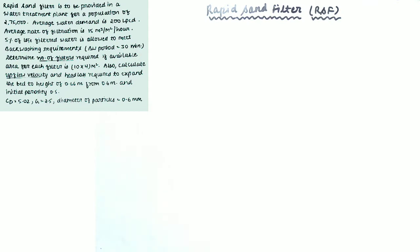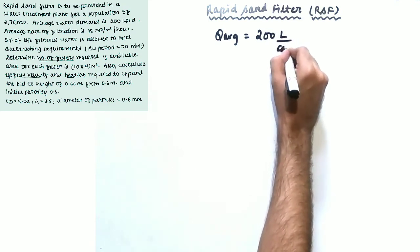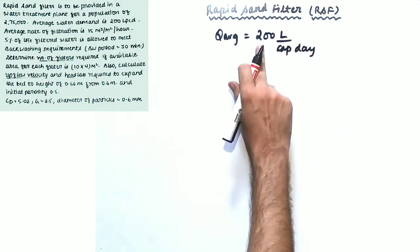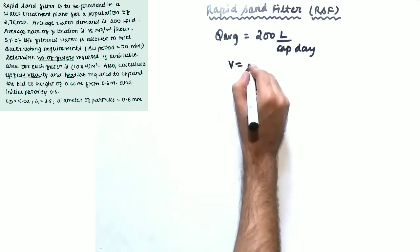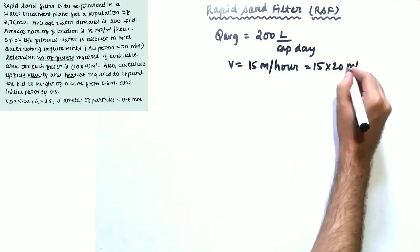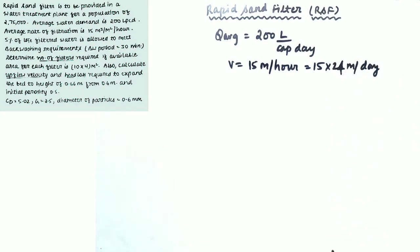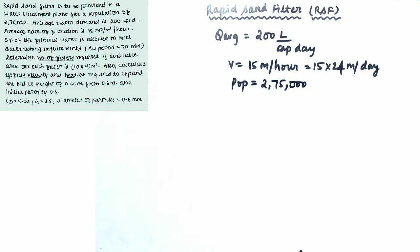In between, I will be telling you the formulas that will be used to solve the questions. The question says that a rapid sand filter is to be provided in a water treatment plant for a population of 2,75,000. Average water demand is given as 200 LPCD — liters per capita per day. That means Q_average is 200 liters per capita per day, meaning one person requires 200 liters per day. The average rate of filtration — that means velocity — is given as 15 meters per hour, which we can convert to meters per day by multiplying by 24. And 5% water is used in backwashing.